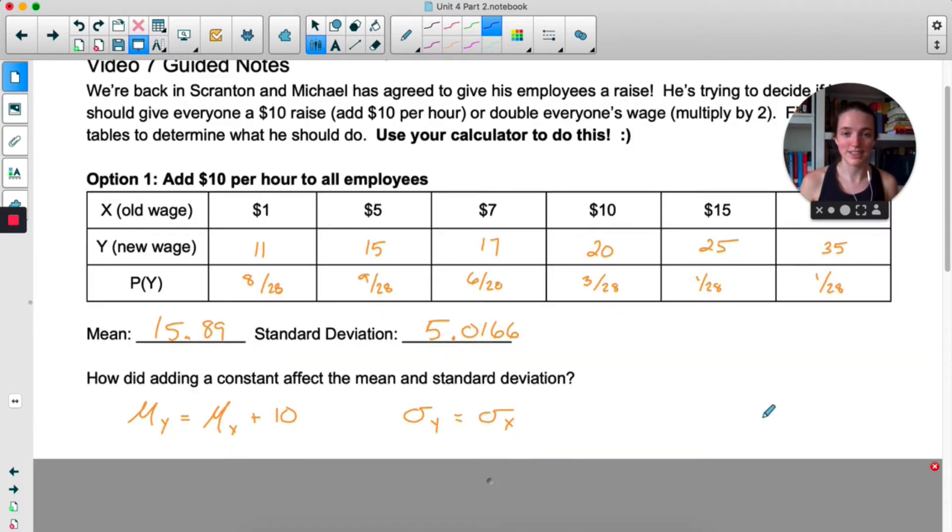Alright, so here's option one. We've added 10 to all the wages. The mean has gone up to 15.89, which is just 10 higher than the original mean. What a coincidence. And the standard deviation is exactly the same. This is hopefully familiar.